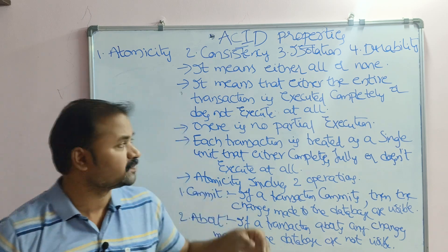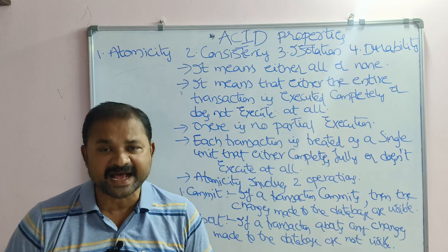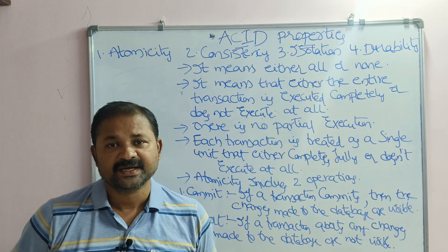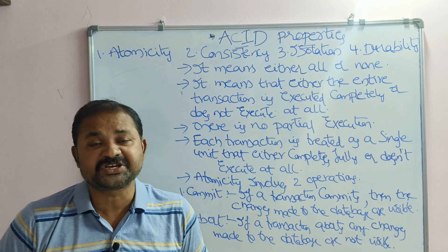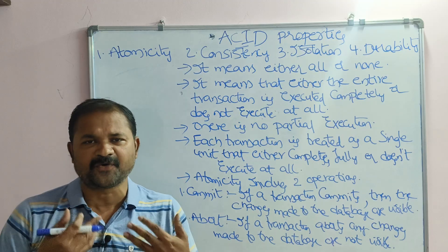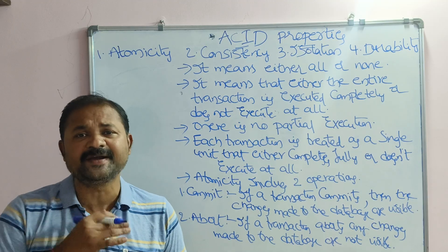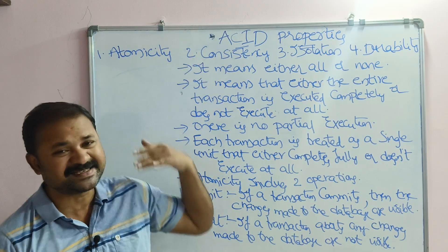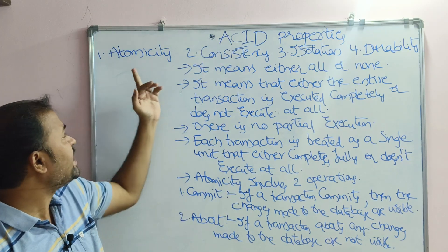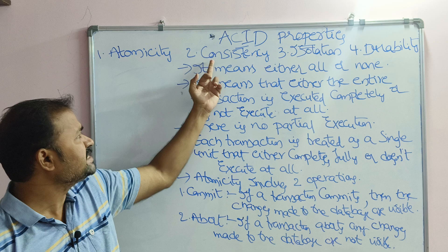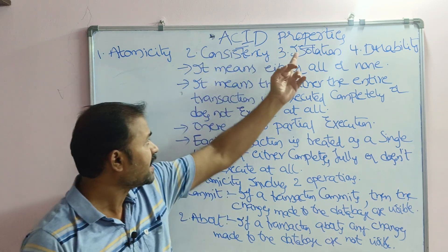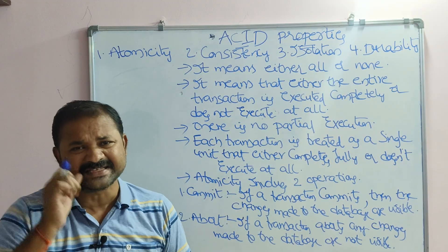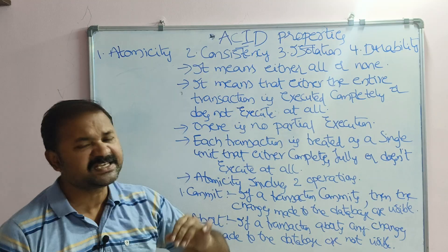Let us discuss ACID properties in transaction management in DBMS. A transaction means a set of operations — a collection of operations like read operation, write operation, and some arithmetic operations like addition, subtraction, and multiplication. ACID stands for Atomicity, Consistency, Isolation, and Durability. Any transaction must possess these four properties.